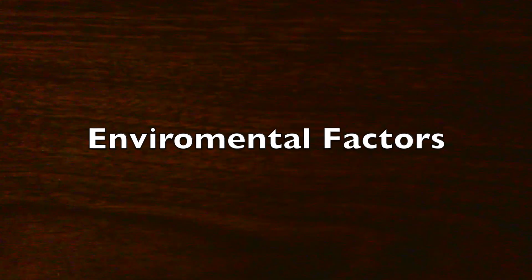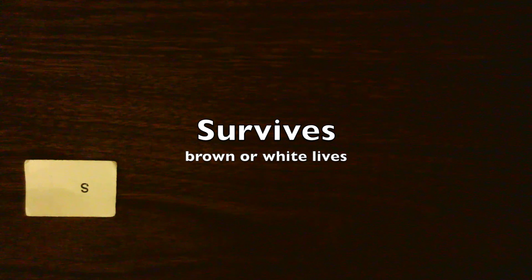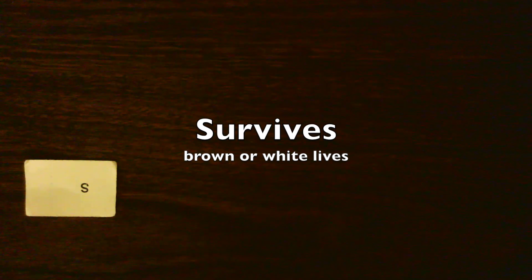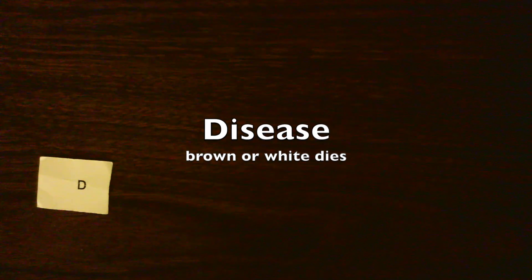The environment is a huge factor in this lab. If you see an S, that means the mouse survives. It doesn't matter if it's white or if it's brown, it's going to live. If you see a D, it doesn't matter if it's brown or if it's white, it gets a disease and dies.